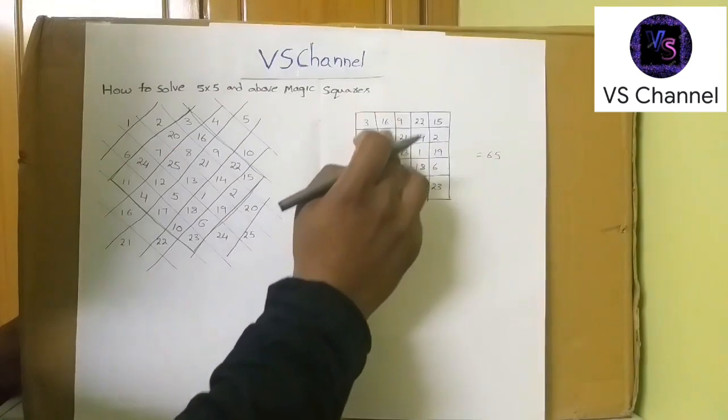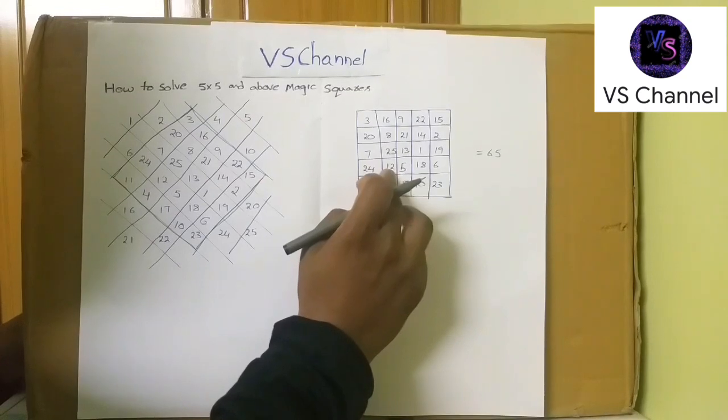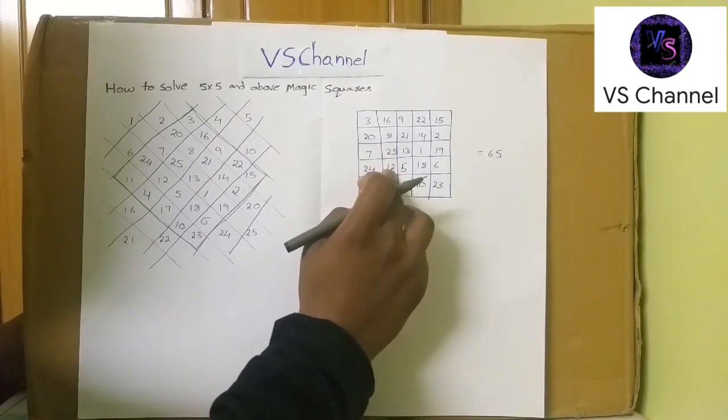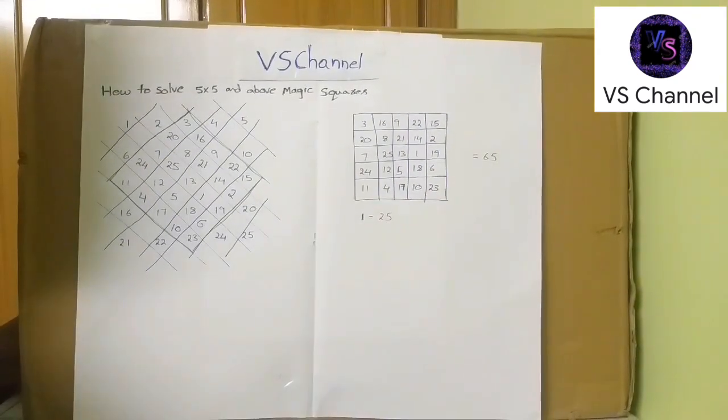Now we can see column wise. 16, 8, 24, 25, 49, 12, 51, sorry, 61 plus 4, 65. Right? So it satisfies the magic square.